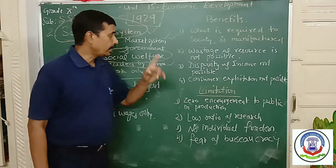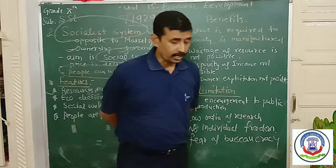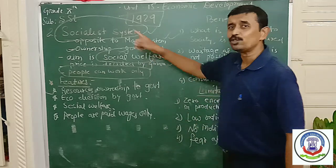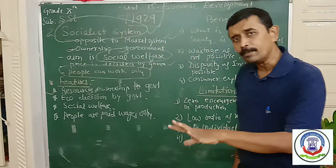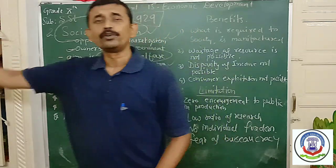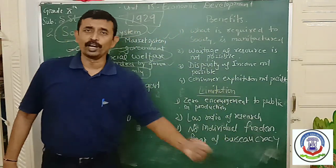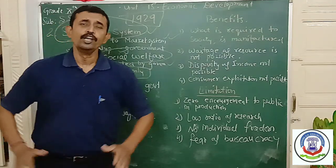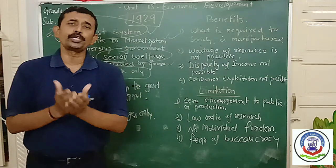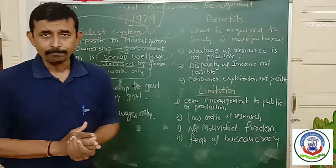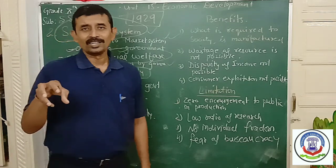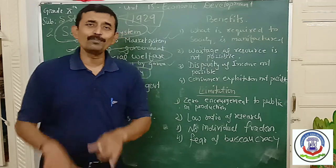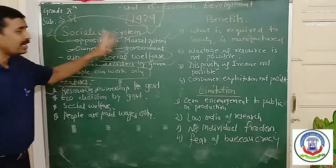Third benefit: disparity of income is not possible. The gap between richness and poverty cannot be seen in the socialistic system of economy. Unlike in the market system where rich people become richer and the poor get poorer, in this type of economy there is equality. All people are labor; they earn their salary as per their talent and skill. They cannot be the owners, so disparity of income cannot be seen.